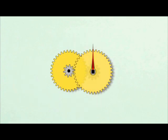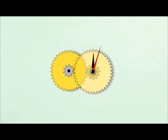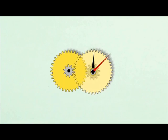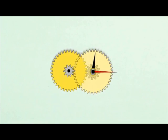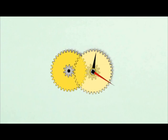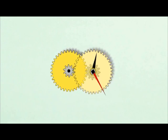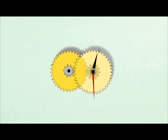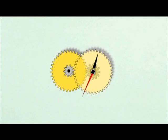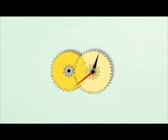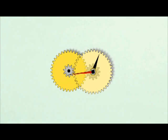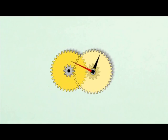Now let's put it into motion so we can see how it works. The hour wheel and pipe are back over the center arbor with the cannon pinion hidden underneath. The red minute hand is attached to the center arbor. The black hour hand is attached to the hour pipe. See how the cannon pinion drives the transfer wheel?